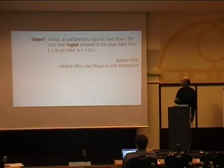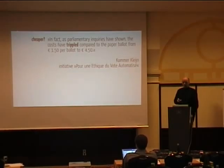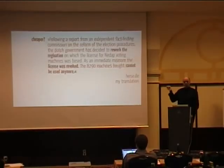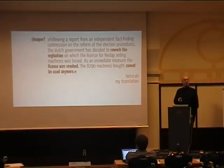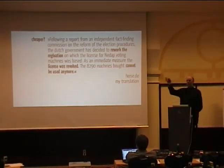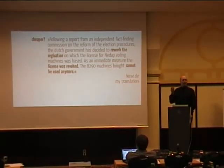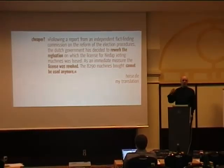And that's from an organization that is not against electronic voting itself — there are clear ethics for electronic voting. But there is another aspect of being more expensive: what happened in the Netherlands recently. Following a report from an independent fact-finding commission, the Dutch government revoked a license for a special kind of voting machine. 8,290 machines that were bought cannot be used anymore — money that flew out the window. There is an aspect in e-voting that makes it very expensive: we don't have the infrastructure, we have to set it up, and there's a lot of error to happen.